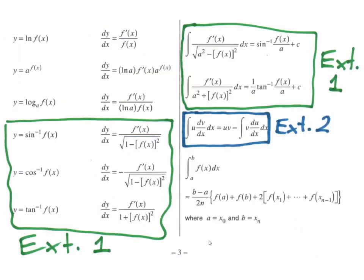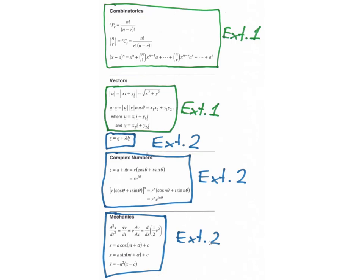On page 3, in the left column, down the bottom, that's extension 1. And in the right column, towards the bottom, there's a little bit of extension 1, and a tiny piece of extension 2. But underneath that, that's the trapezoidal rule, that's advanced. And page 4, as I mentioned earlier, nothing from advanced. It's all extension 1 and extension 2.